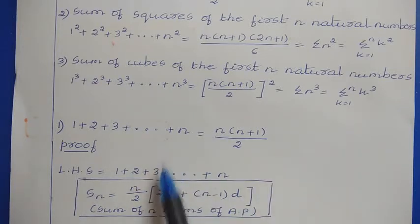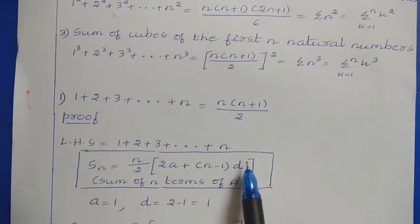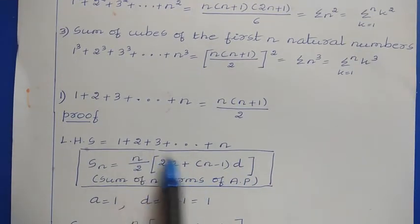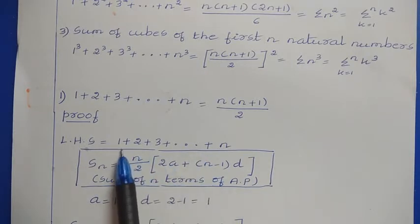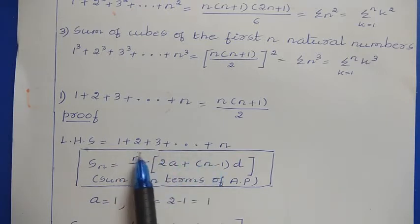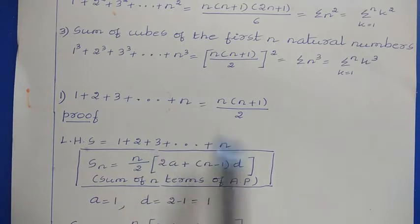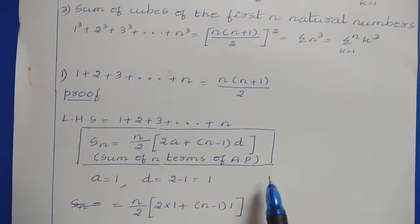We have here left hand side 1 plus 2 plus 3 and so on up to plus n. Now, if you observe these values, these values are in the form of arithmetic progression. Here the first term we can take as 1, and if you find the common difference between two continuous terms, then we are getting here the same value, that is 1. Now here to find the sum of these values, I am applying the sum of n terms of AP formula.